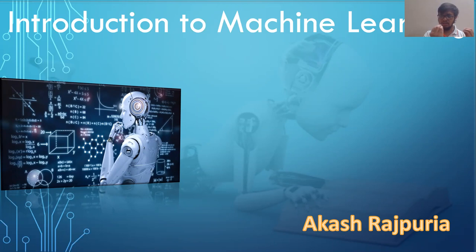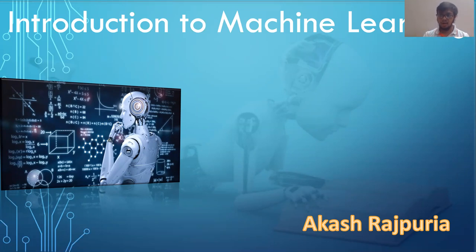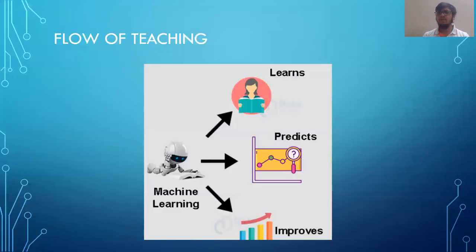If a plant can learn, animals can learn, and a human can learn, why can't a machine? That is the essence of introduction to machine learning — to make a machine independent, capable of learning and solving complex problems like a human, essentially mimicking a human. There is a flow in teaching in machine learning — how to make a machine learn like a newborn baby.